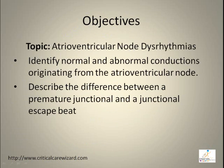Objective of this module: at the end of this presentation, the learner will be able to identify normal and abnormal conductions originating from the atrioventricular node, and describe the difference between a premature junctional and a junctional escape beat.